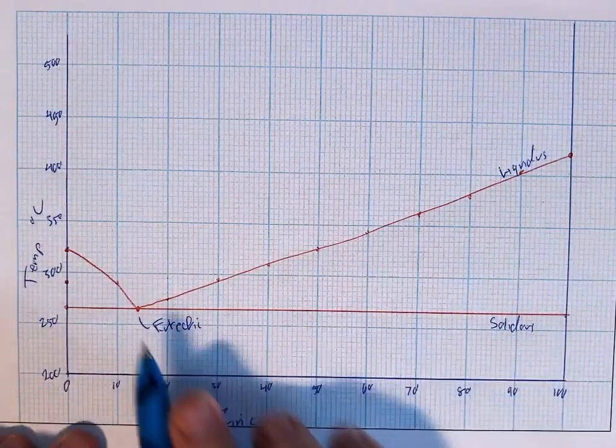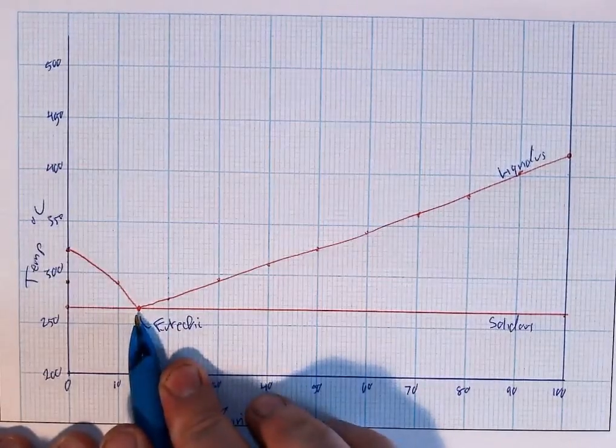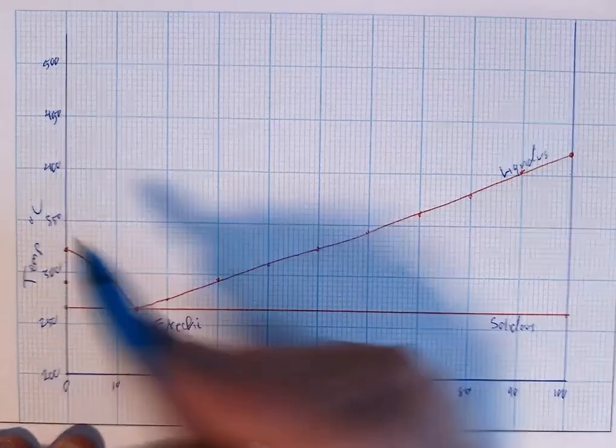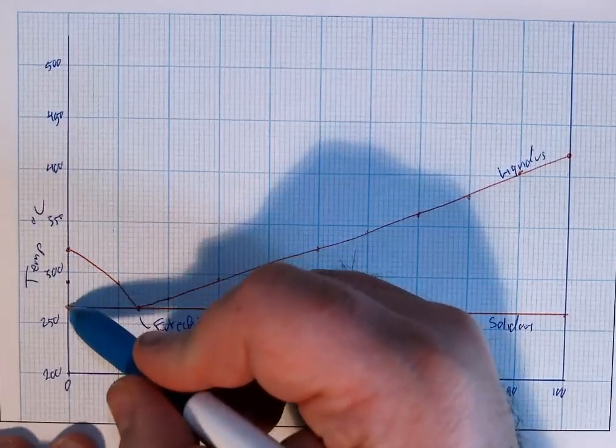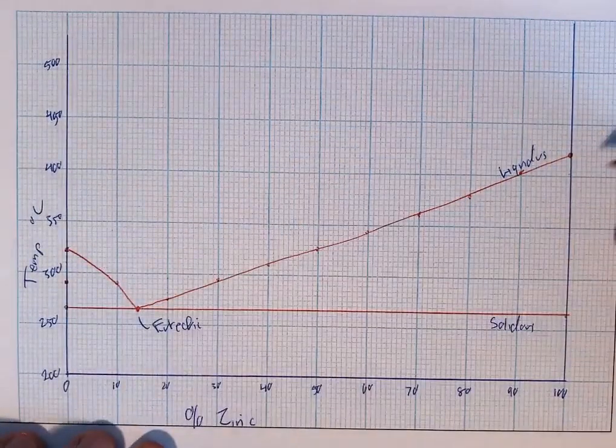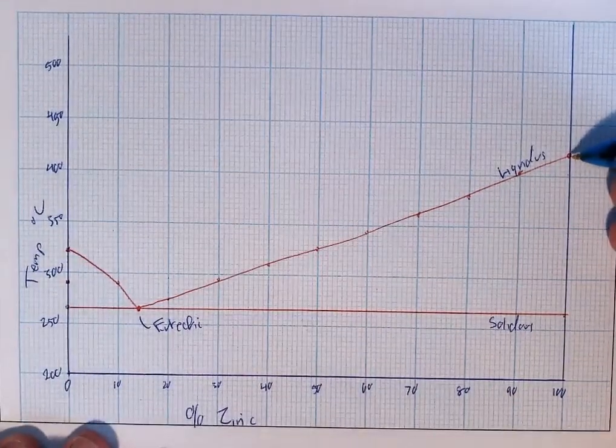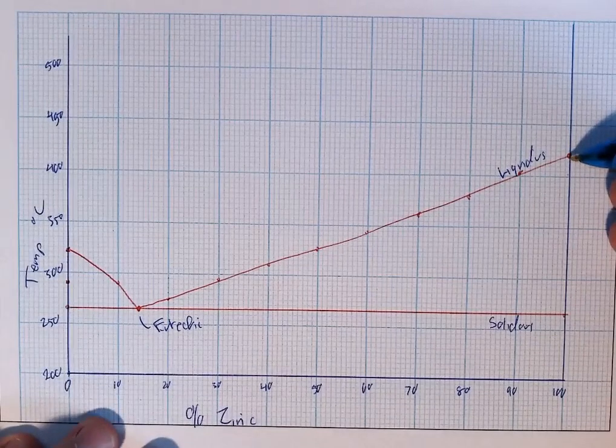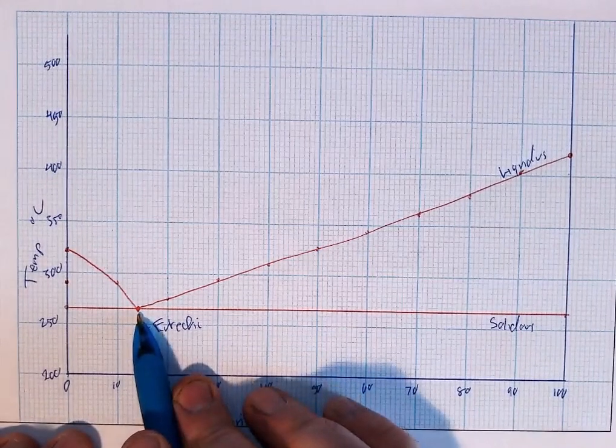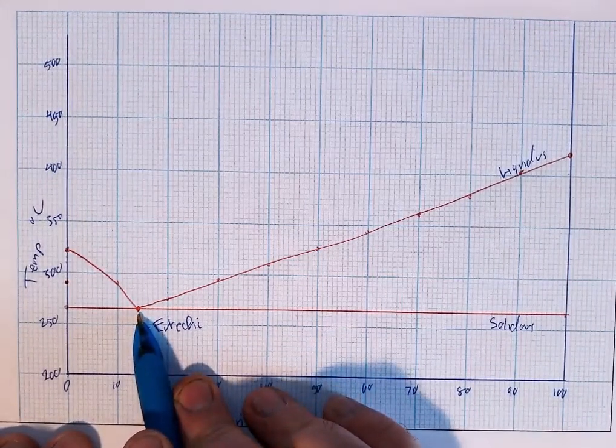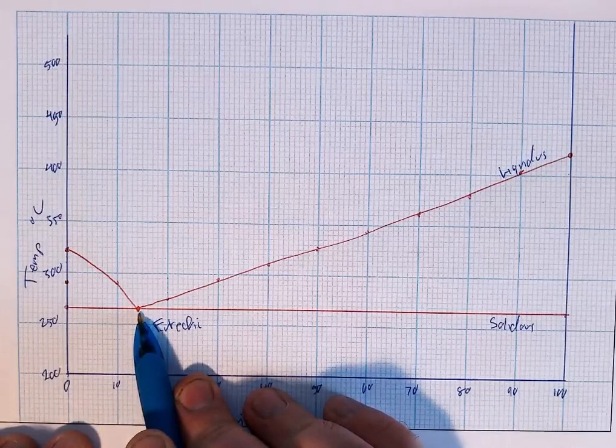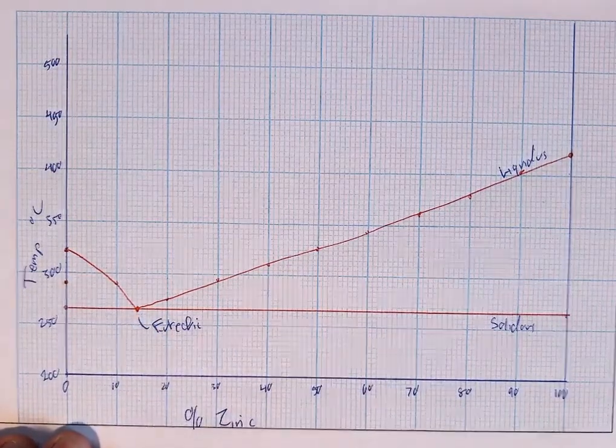Now what's important with this diagram here is at the eutectic point there is no drop in temperature as it cools. Pure cadmium will actually drop in temperature as it cools between 321 and 266. Pure zinc will drop in temperature as it cools from 419 down to 266. Only at the eutectic alloy will you see no drop in temperature as it cools. So that's our eutectic point.